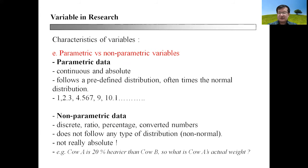The fifth characteristic will be parametric versus non-parametric features of variables. What do we mean by parametric variables? Parametric variables are comprised of parametric data, that means they are continuous and absolute. Parametric data follow a predefined distribution and oftentimes a normal distribution, so they conform to normal distribution.